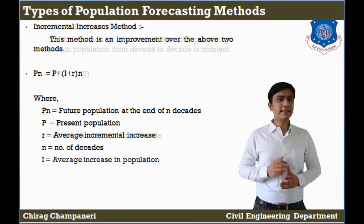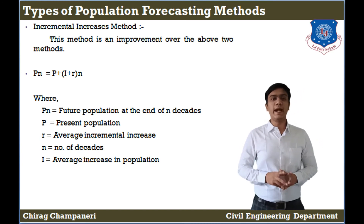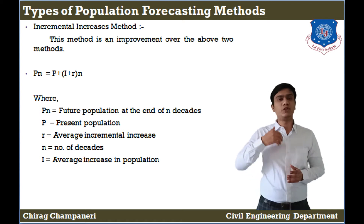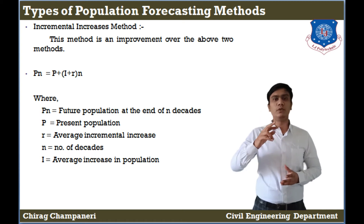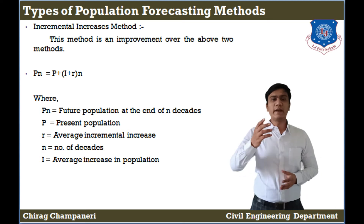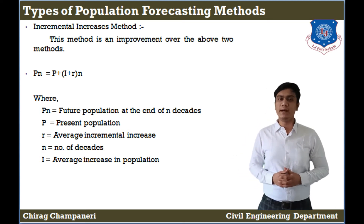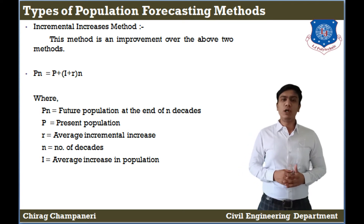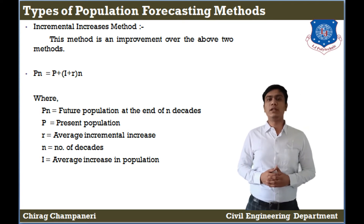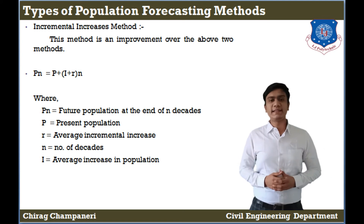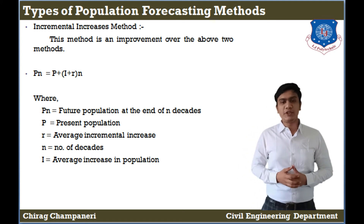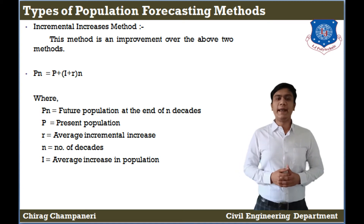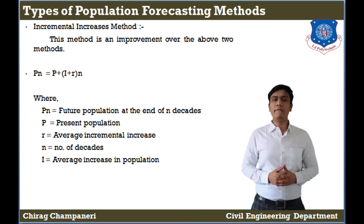Next is the Incremental Increase Method. This method is an advanced method that combines both the Arithmetical Increase Method and the Geometrical Increase Method. The equation is: Pn = P + nI + R × N. Here, Pn is the future population at the end of N decades, P is the present population, R is the average incremental increase value, and N is the number of decades.